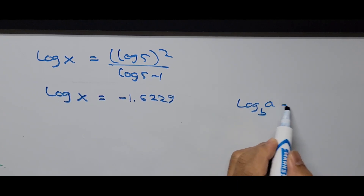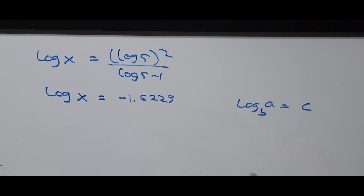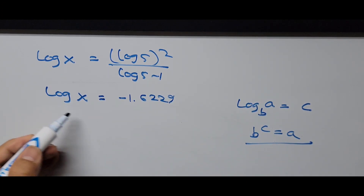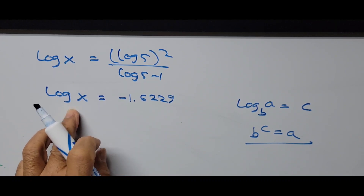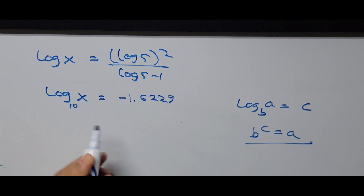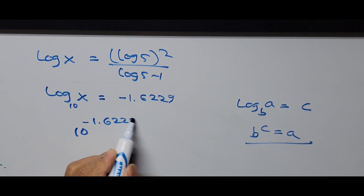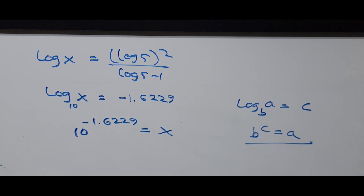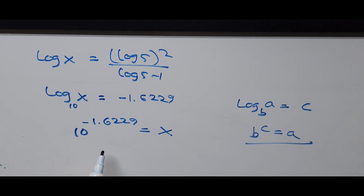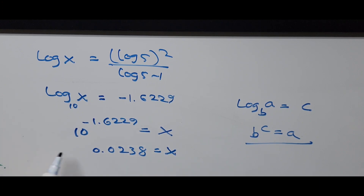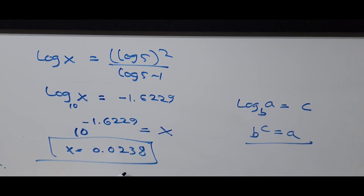Using the logarithmic-to-exponential conversion: if log of A to base B equals C, then B raised to C equals A. Since no base is written, it's automatically base 10. So this becomes 10 raised to negative 1.6229 equals X. Using our calculator, 10 raised to negative 1.6229 equals 0.0238. So X equals 0.0238.